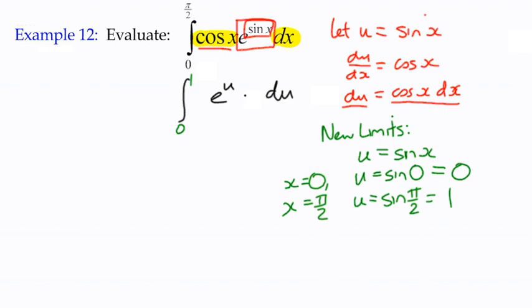We can go ahead and do the integration. Easiest integration in the world because the integral of e to the power u with respect to u is still e to the power of u. Plus c if we had an indefinite integral. But we've got a definite integral.